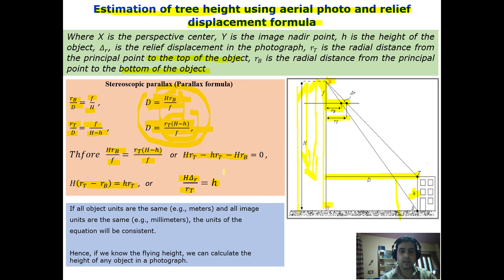We can now estimate the height of a building or tree using this formula: h equals H·delta r upon rt. The flying height H is known, delta r can be measured from the aerial photograph where the perspective center is marked, and rt is the distance from the perspective center to the top of the tree. With these known terms, we can estimate height using the relief displacement formula.